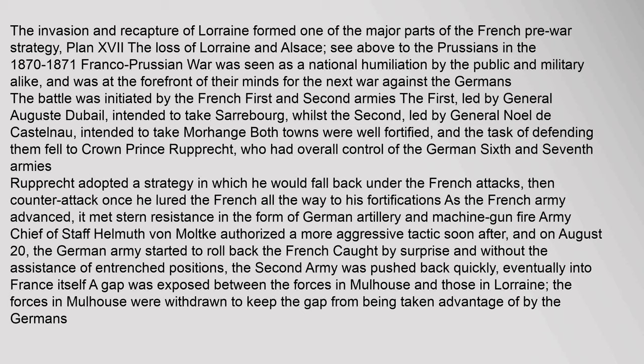Both towns were well fortified, and the task of defending them fell to Crown Prince Ruprecht, who had overall control of the German Sixth and Seventh Armies. Ruprecht adopted a strategy in which he would fall back under the French attacks, then counterattack once he lured the French all the way to his fortifications. As the French army advanced, it met stern resistance in the form of German artillery and machinegun fire. Army Chief of Staff Helmuth von Moltke authorized a more aggressive tactic soon after, and on August 20 the German army started to roll back the French. Caught by surprise and without the assistance of entrenched positions, the Second Army was pushed back quickly, eventually into France itself.